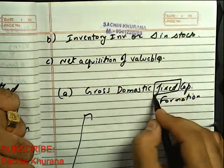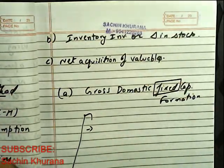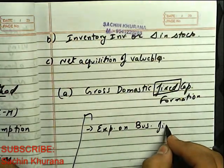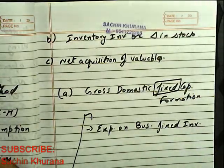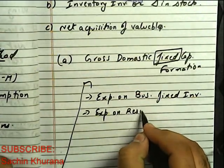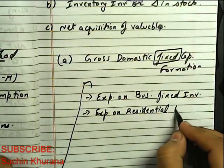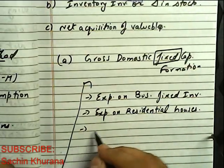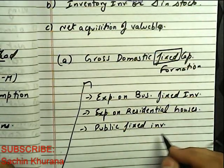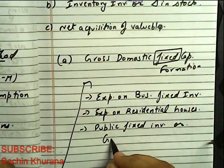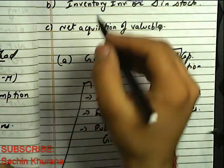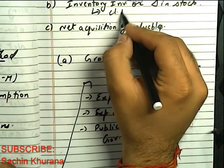Under Gross Domestic Fixed Capital Formation, the sub-components are: first, expenditure on business fixed investment; second, expenditure on residential houses; third, public fixed investment and government fixed investment. For inventory investment or change in stock, the formula is closing stock minus opening stock, which we have discussed before.